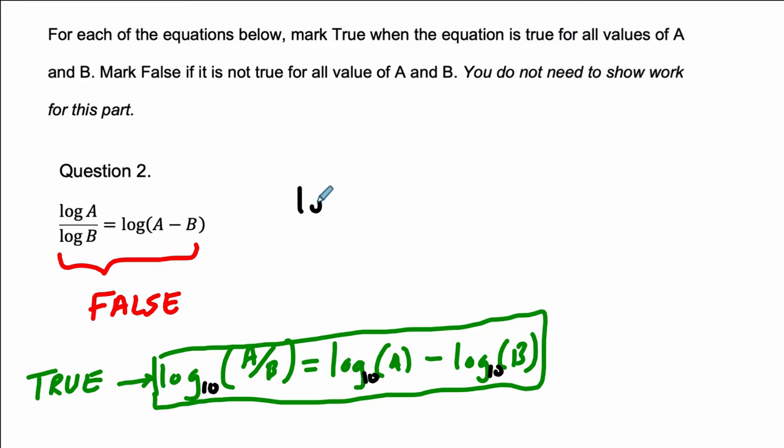So, for example, if you have the log of, let's say, A is 1,000, so 10 to the third, and that's divided by the log of 10 to the first. Does this equal the log of 10 to the third minus 10 to the first?